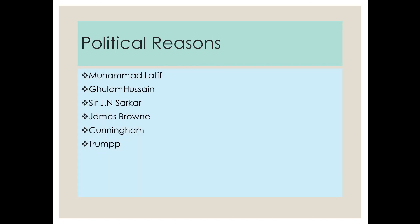If we say the martyrdom was for political reasons, historians like Mohamed Latif, Gula Hussein, Jadunath Sarkar, James Brown, Cunningham, and Trump believe the martyrdom of Guru Ji was because of political reasons. They say that Guru had established a state within a state through the Masand system — he was collecting taxes. So for an emperor like Aurangzeb to see anybody as another supreme power, martyrdom was the only alternative he had.